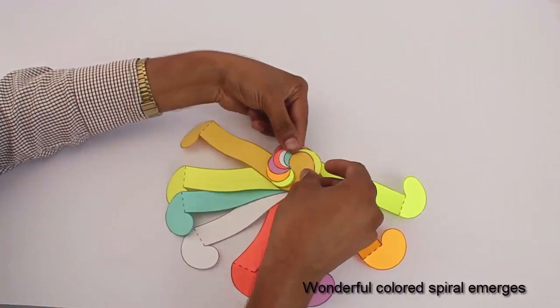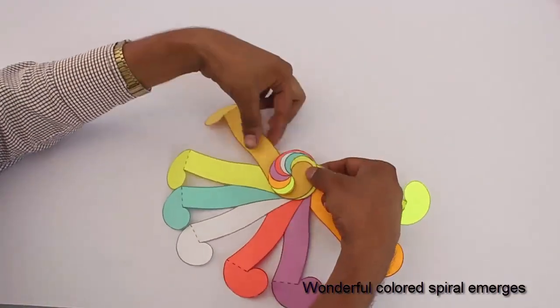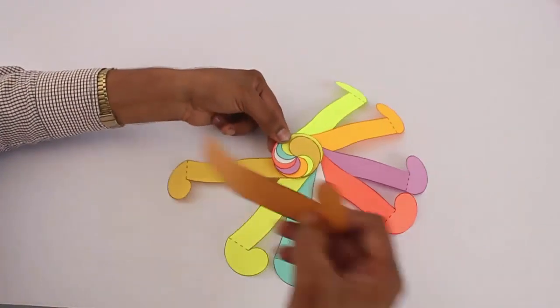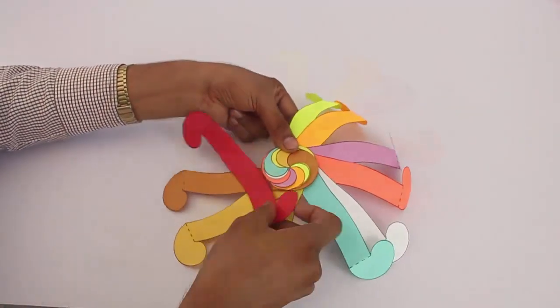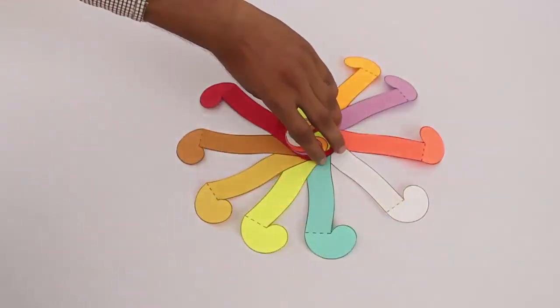On interlocking all the 10 pieces, you will see a very symmetric spiral. Hold the joint and invert the spiral.